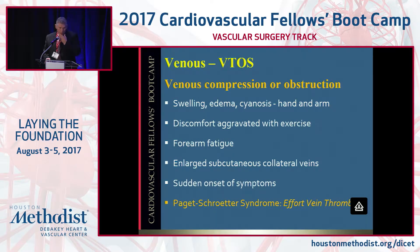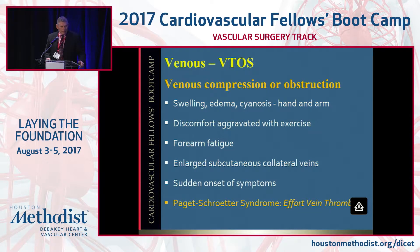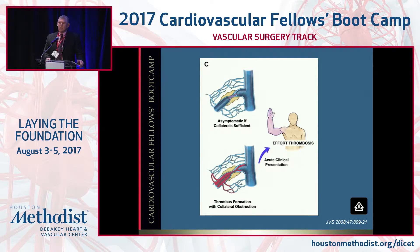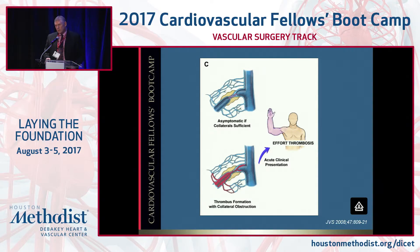How about VTOS — venous compression or obstruction? You can get swelling, edema, cyanosis. VTOS is not always synonymous with Paget-Schroetter or effort vein thrombosis. You can get compression without thrombosis and swelling and significant dysfunction. You can get forearm fatigue, large subcutaneous collateral veins, and sudden onset symptoms. With chronic repetitive injury, you get early fibrosis and circumferential perivenous scarring. Then collaterals develop with no symptoms, and it's only when the thrombus forms and exceeds the collateral ability to return venous blood flow to the heart that you get symptoms. It can be slowly progressive or very acute.